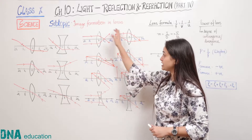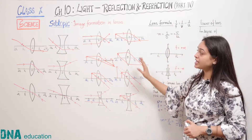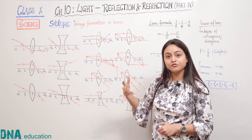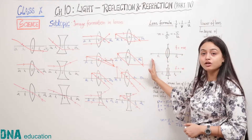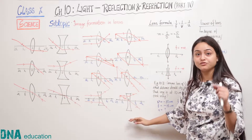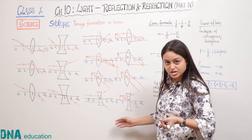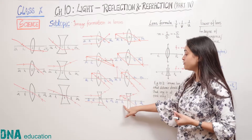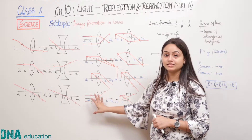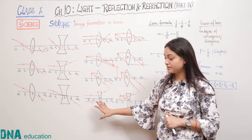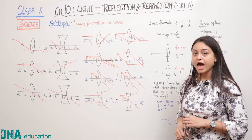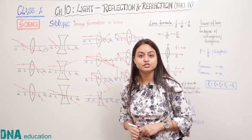So in the cases of convex lenses, you have seen that the image can be point-sized, real and inverted, enlarged, or virtual and erect — just like concave mirrors. And in concave lenses, the image is always virtual, erect and diminished. So these are the ray diagrams of lenses. Now we have to study the lens formula.